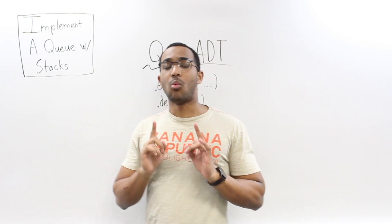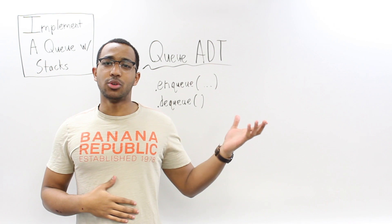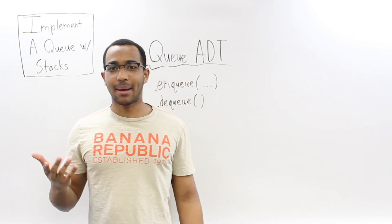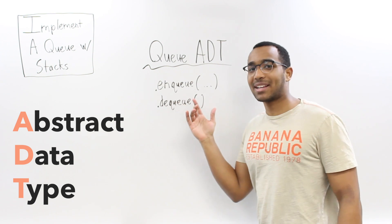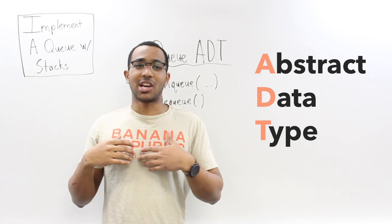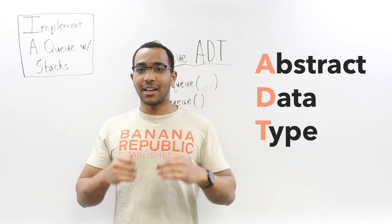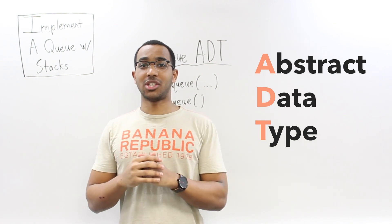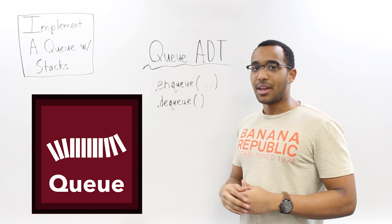Today we're going to talk about how to implement a queue with two stacks. First, let's establish what a queue is - it's not a data structure, it's an abstract data type. An abstract data type is just a certain policy we define, saying that for an item to be this type it has to support certain functionalities. A queue has to support an enqueue function and a dequeue function.